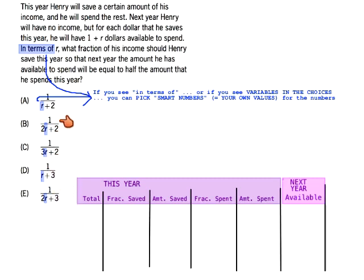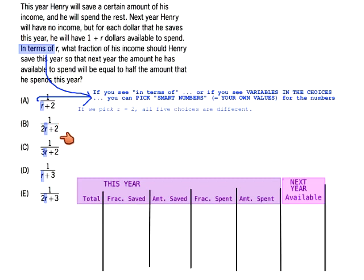The point is to pick a number that makes all the answer choices different. If we pick R equals 1, that's a bad idea because then choices A and B are both 4, and C and D are both 5. But if we pick R equals 2, then all five choices are different: that's 1/4, 1/6, 1/8, 1/5, and 1/7.